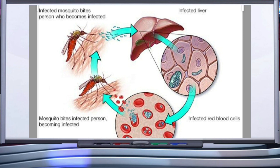This slide shows the complete stages in the life cycle of Plasmodium. The malarial parasite requires two hosts to complete its life cycle: human and mosquito. Plasmodium enters the human body as a sporozoite through the bite of an infected female Anopheles mosquito. The parasite initially multiplies within the liver cells and then attacks the red blood cells, causing their rupture.